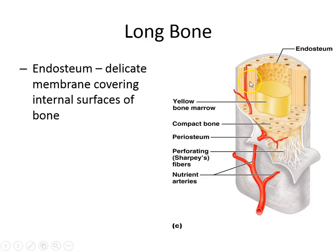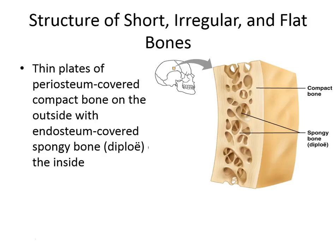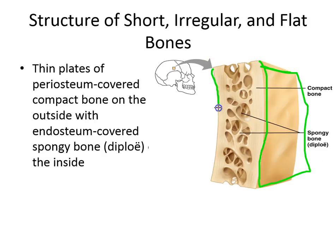There's the endosteum lining the internal surfaces like your medullary cavity — that space with the yellow bone marrow — as well as the spongy bone in the epiphysis. And for flat bone, it's going to look very similar: compact bone and spongy bone, periosteum on both sides, and then endosteum lining these spaces, with red bone marrow inside.